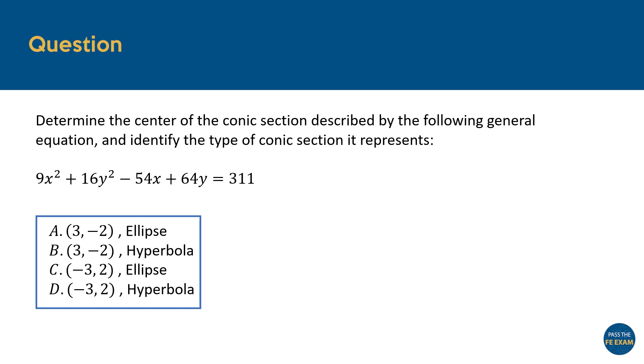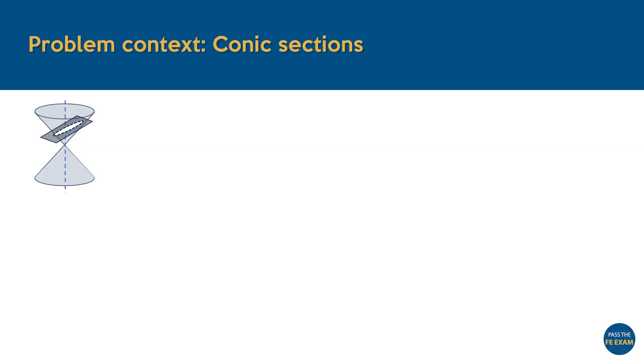Before diving into the solution, let's take a moment to review some essential concepts that'll help us approach this problem effectively. We start off by looking at what a conic section refers to. This can be defined as any curve formed by the intersection of a plane with a right circular cone, as illustrated here.